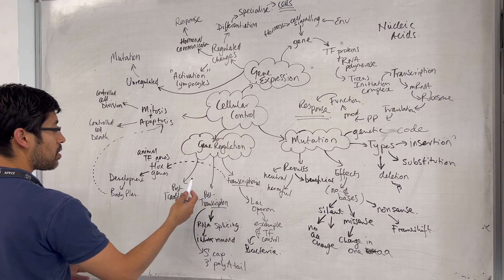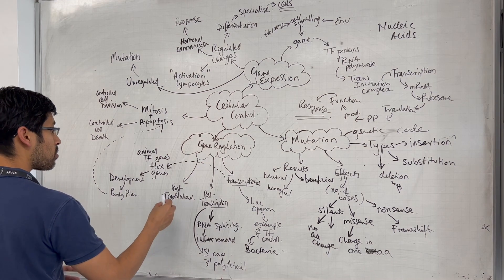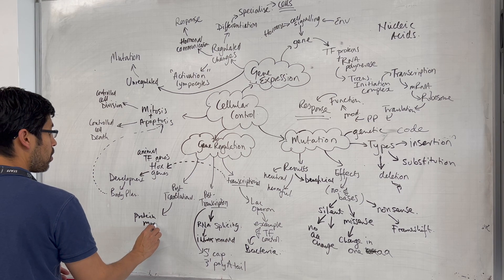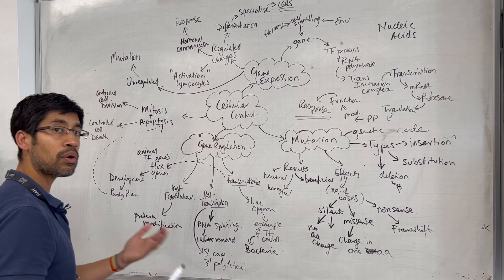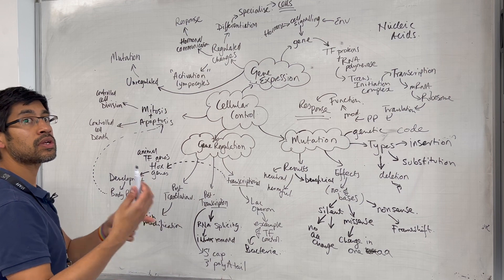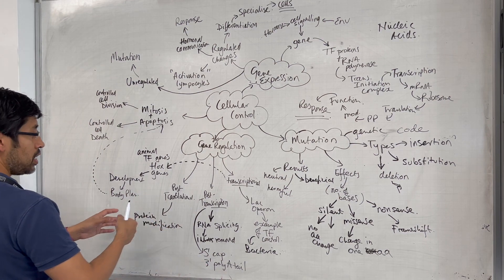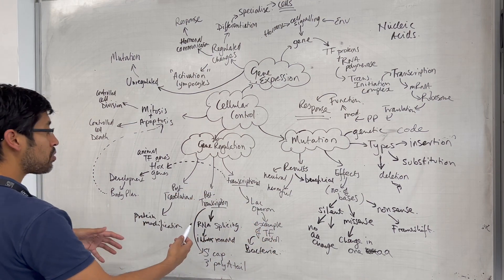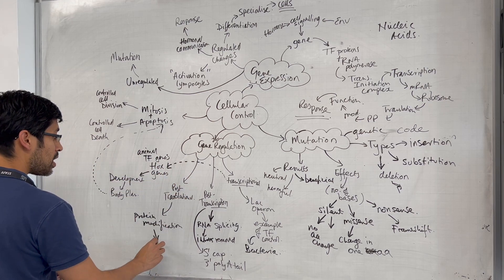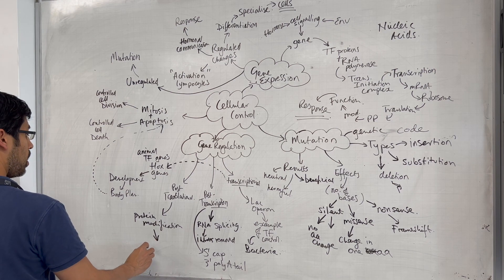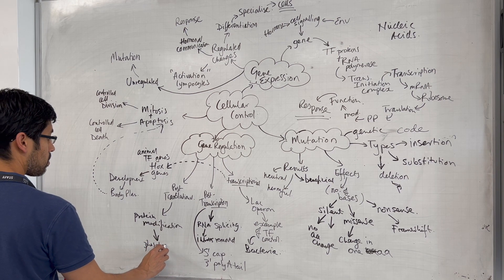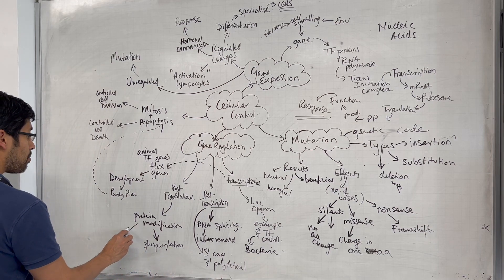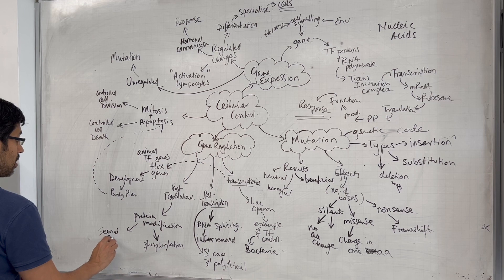Post-translational regulation of gene expression is about protein modifications — what modifications can be done to a protein to change its function. We might have lots of protein but if it's inactive it's not going to do anything. Certain things have to happen to a protein to make it active, such as phosphorylation — phosphate groups added to proteins activate or deactivate them — or binding to cyclic AMP as second messengers.